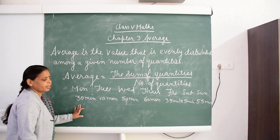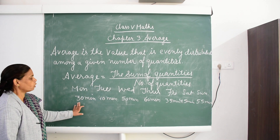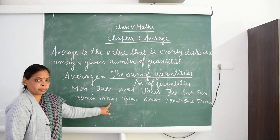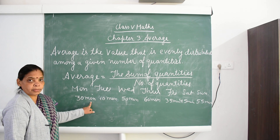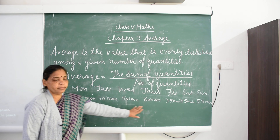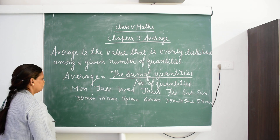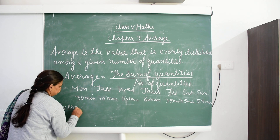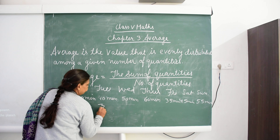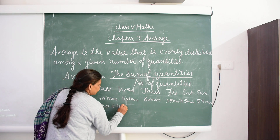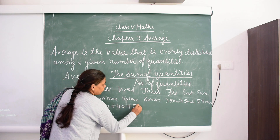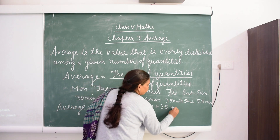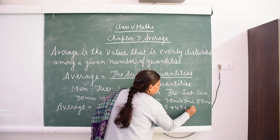Always remember when you find the average, all the quantities must be in the same unit. If the unit is minutes, then everything in minutes; if hours, then in hours; centimeters in centimeters — all units must be the same. So, average equals 30 plus 40 plus 50 plus 60 plus 35 plus 45 plus 55.